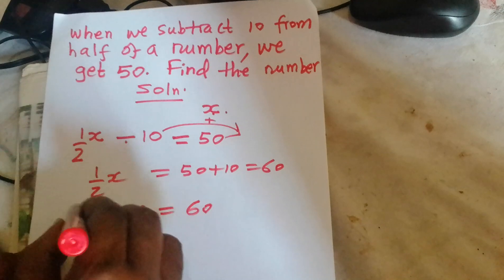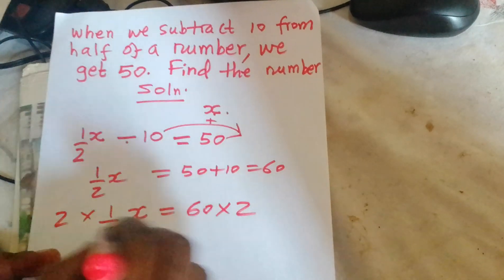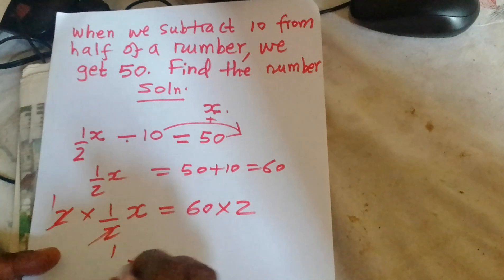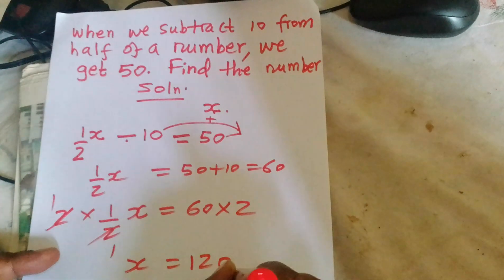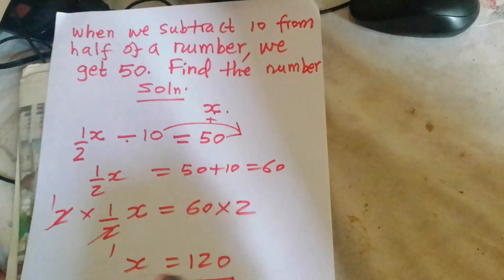Then, we multiply by twice. By twice both sides, this goes away. So, x equals to 120. And therefore, the number itself is 120.